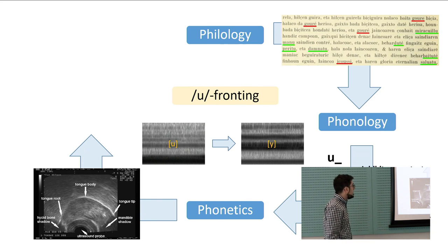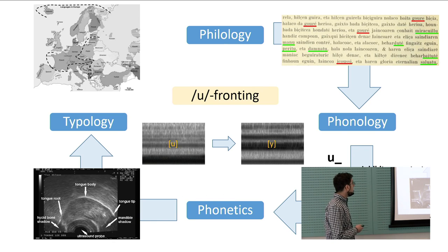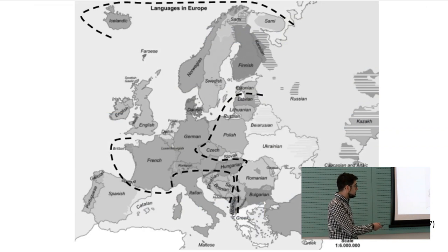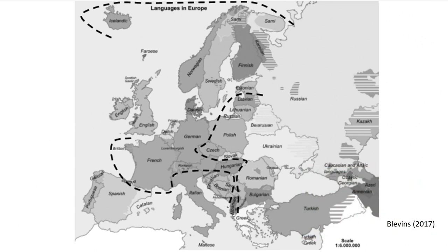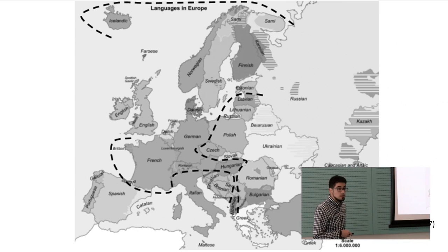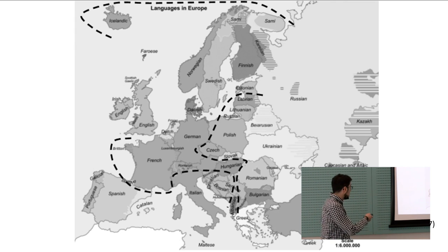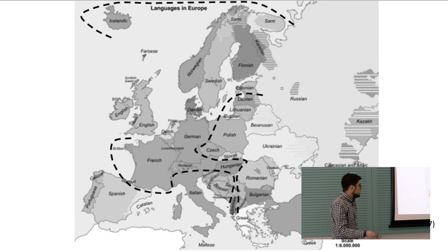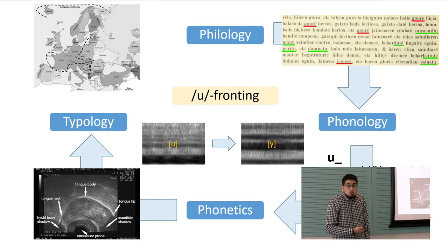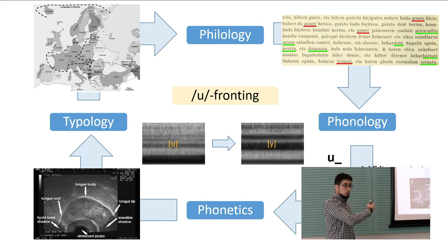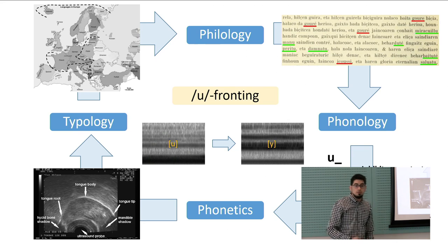Now that we mostly understand what's happening, we can move on to typology and see that in Europe — this is a map from Juliet's work — there are many languages that show U-fronting, and they do form an area. Basque is the southwesternmost language of this linguistic area sharing this particular sound change. That means it is very likely that contact played a role. Now that we know what happened, we have a more complete understanding and can go back to our data to produce a better, more complete account of this sound pattern. This is basically what I do.